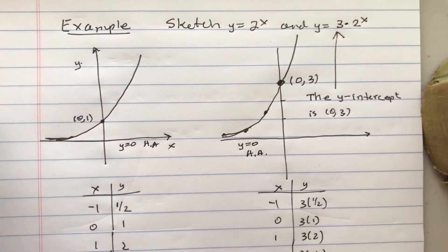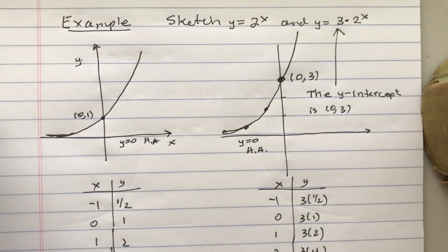Everything else stays the same in terms of the horizontal asymptote. And it's still increasing. It's not exactly the same, but the general shape is very similar.